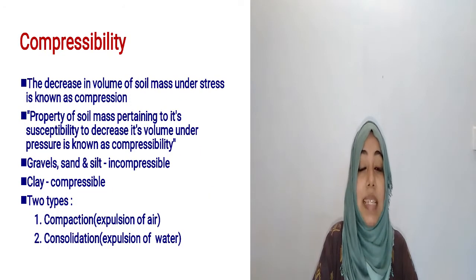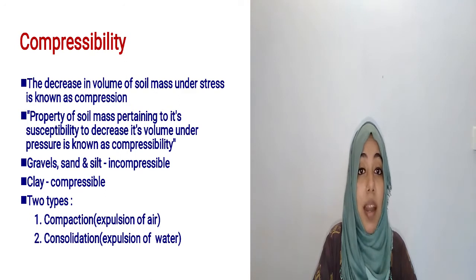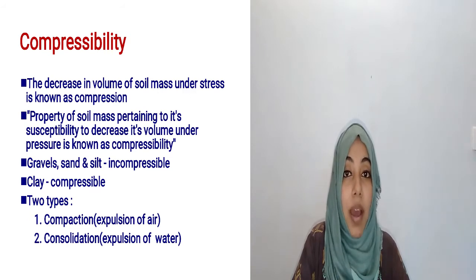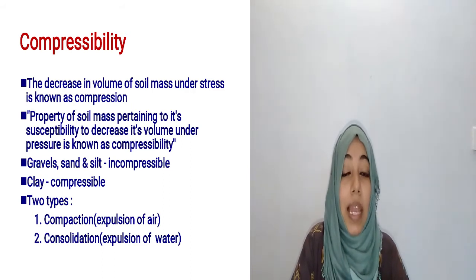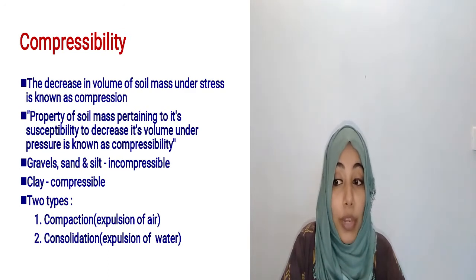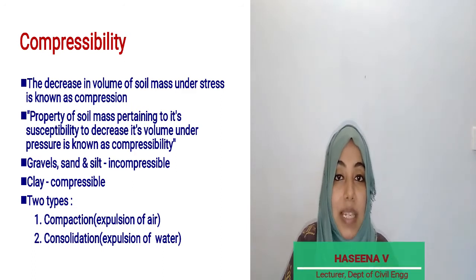The second important engineering property is compressibility. What is meant by compressibility? The decreasing volume of soil mass under stress is known as compression. Compressibility is the property of soil mass pertaining to its susceptibility to decrease in volume under pressure or stress.